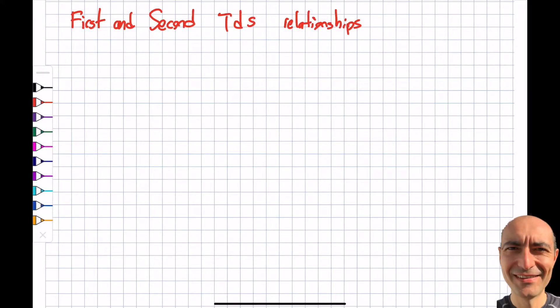All right, welcome to another segment. In this one, we are going to make a relationship between several properties that we already know so far. This particular relationship, there are two of them: first and second TdS. T is temperature, dS is the entropy. This is also known as Gibbs equations in case you look at different resources.